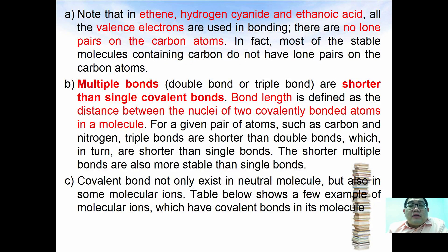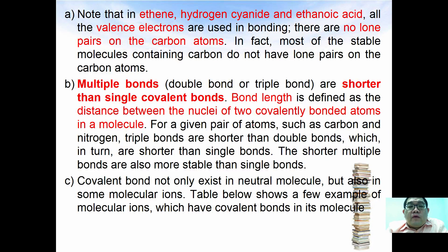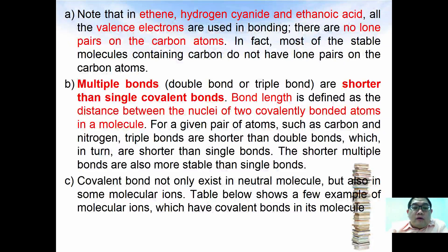Note that in ethyne, hydrogen cyanide, and acetic acid, all valence electrons are used in bonding — there are no lone pair electrons on carbon. Most stable molecules containing carbon do not have lone pair electrons on their carbon atoms. In the formation of multiple bonds, multiple bonds are shorter than single bonds. Bond length is defined as the distance between the two nuclei of the covalently bonded atoms. For a given pair of atoms such as carbon–nitrogen, triple bonds are shorter than double bonds, which in turn are shorter than single bonds. Shorter multiple bonds are more stable than single bonds.